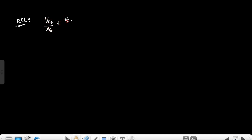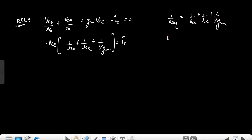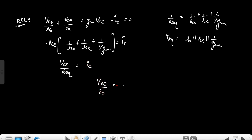Applying KCL at the collector terminal: v_ce / r0 + gm·v_pi equals i_c, and since v_pi = v_ce, this becomes v_ce·(1/r0 + 1/r_pi + gm) = i_c. We can rewrite gm as 1/(1/gm), giving us 1/r_equivalent = 1/r0 + 1/r_pi + 1/(1/gm). So r_equivalent is the parallel combination of r0, r_pi, and 1/gm, and v_ce / i_c equals r_equivalent.